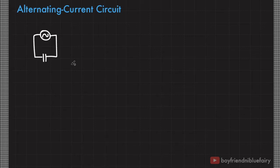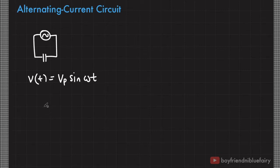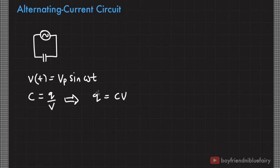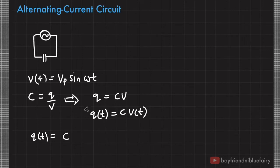Now suppose we connect a capacitor to an AC source. The voltage across this capacitor will be a function of time, depending on the voltage introduced by the AC source, which is V sub P times sine(ωt). From the definition of capacitance, we can write the charge in the capacitor as a function of voltage across it: Q equals C times V. Since voltage is now a function of time, charge becomes a function of time as well. So Q(t) equals C times V sub P times sine(ωt).